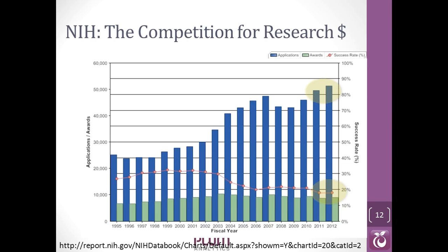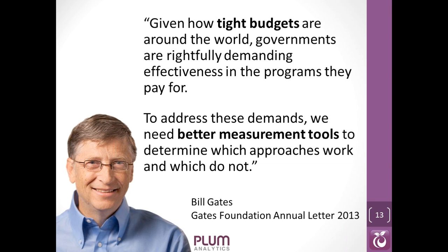Here's a chart from the NIH in the US — the National Institutes of Health, a very big funder. In the last 15 years, grant applications have been going steadily up, the dollars have been staying steady, and the success rate has gone down. Last year, the success rate for grants was under 20% — very competitive, and true around the world. The Gates Foundation's annual letter reflects the same thing: we're funding these grants, but how do we know what we're getting? We need to be able to measure these so we know we're using the money in the best possible way.